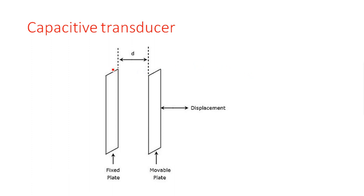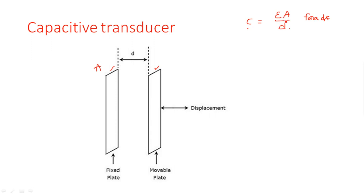The third type is the capacitor transducer. It uses two plates — one fixed plate and one movable plate. In normal conditions, with both plates fixed, the distance between the plates is d and the plate area is A. The capacitance formula is: C = εA/d farads, where ε = ε₀εᵣ (free space permittivity times relative permittivity), A is plate area, and d is the distance between the plates.